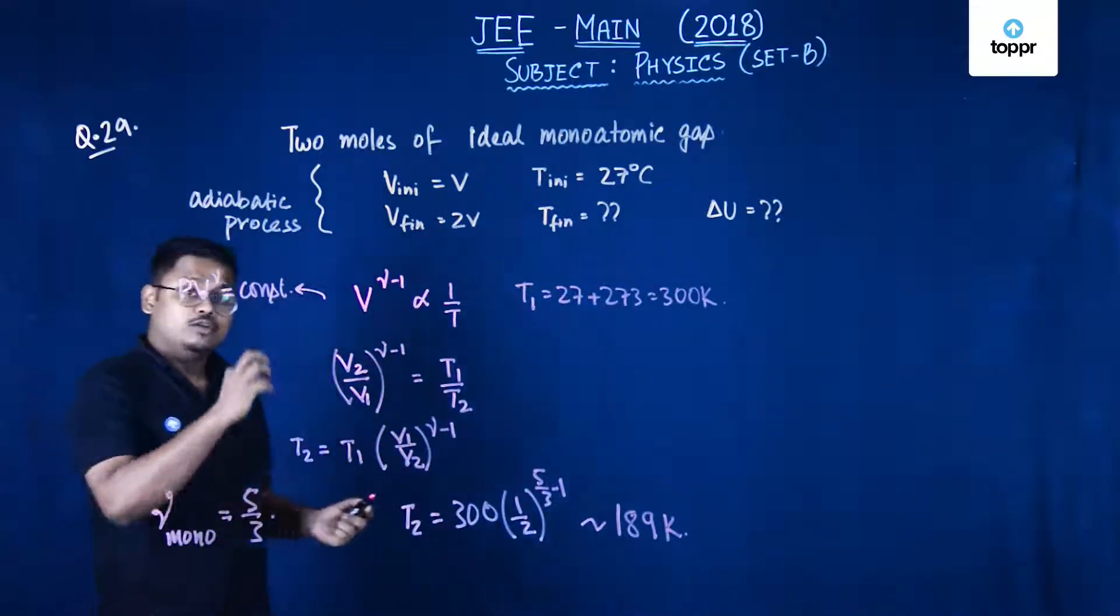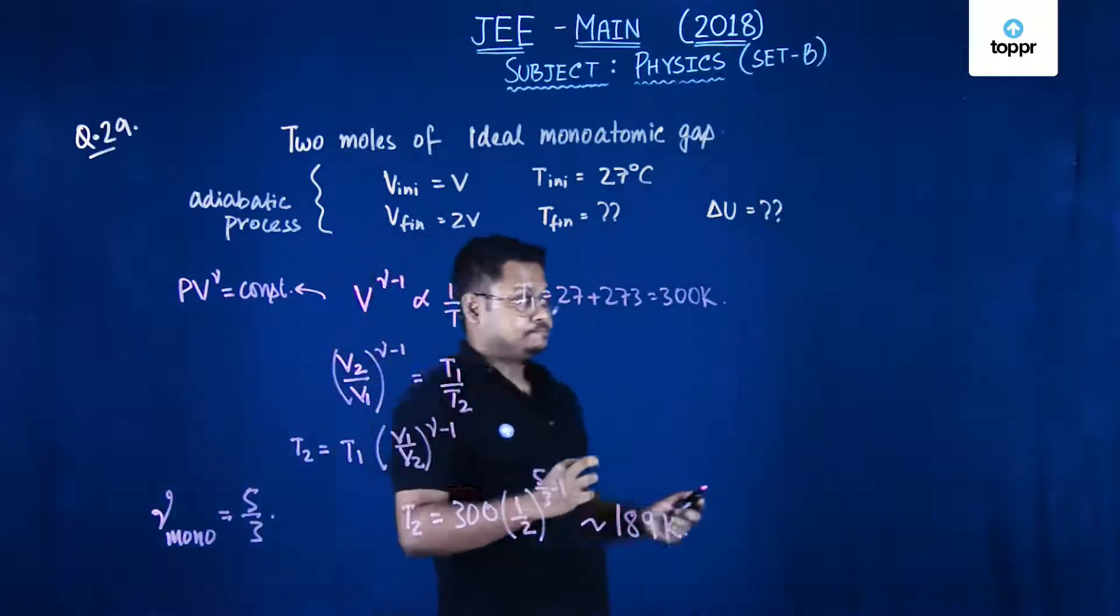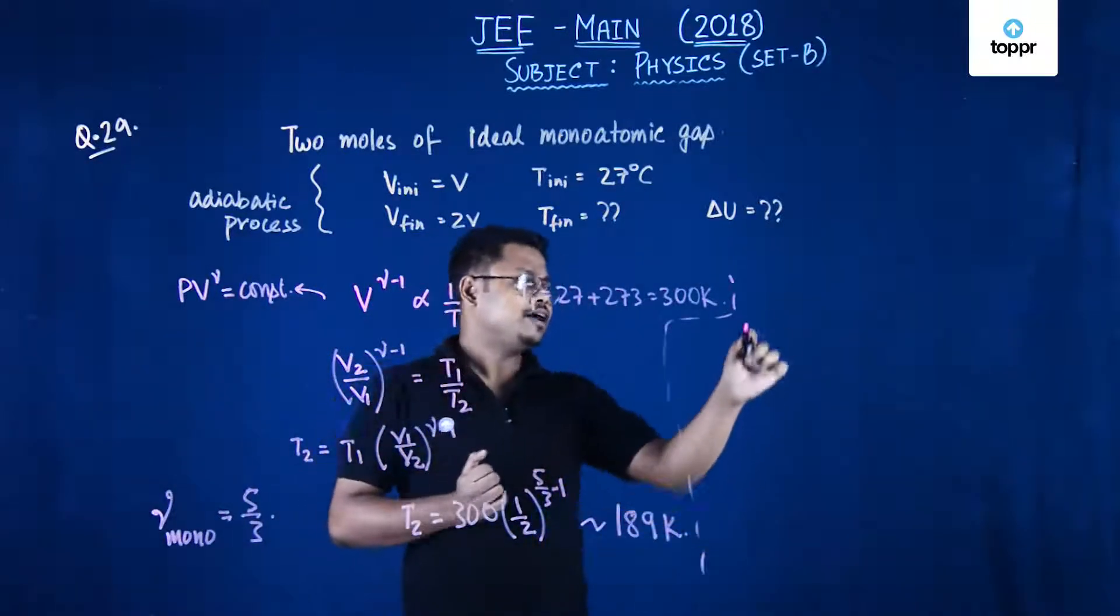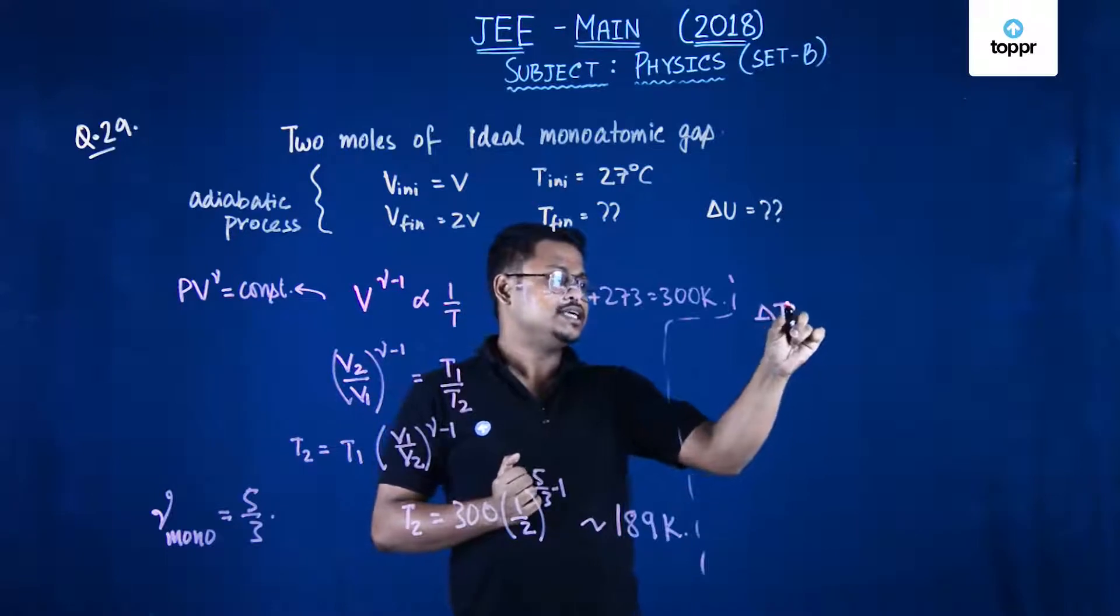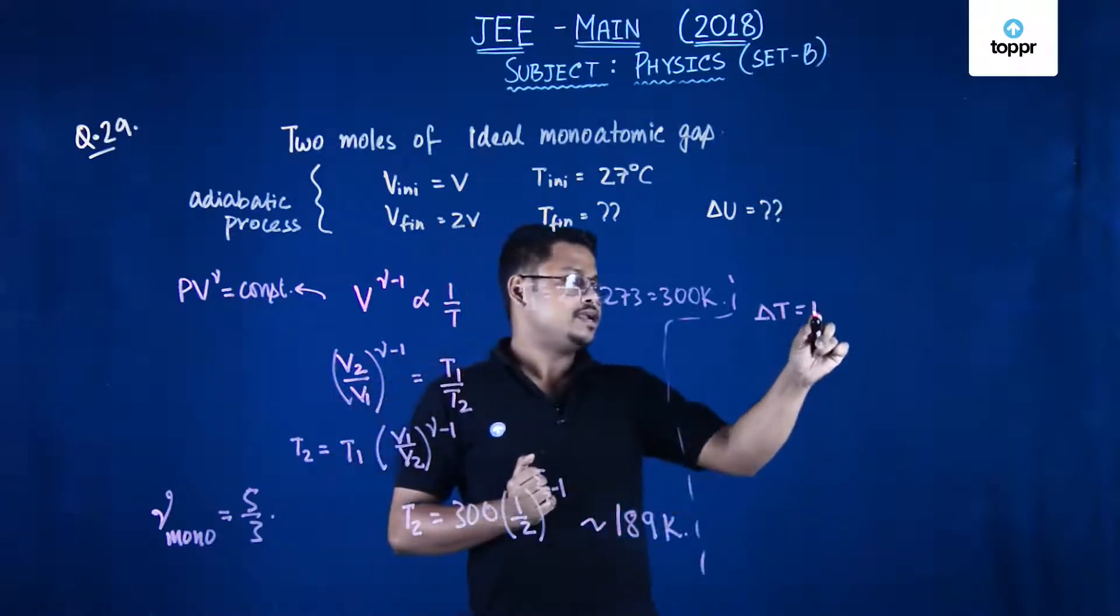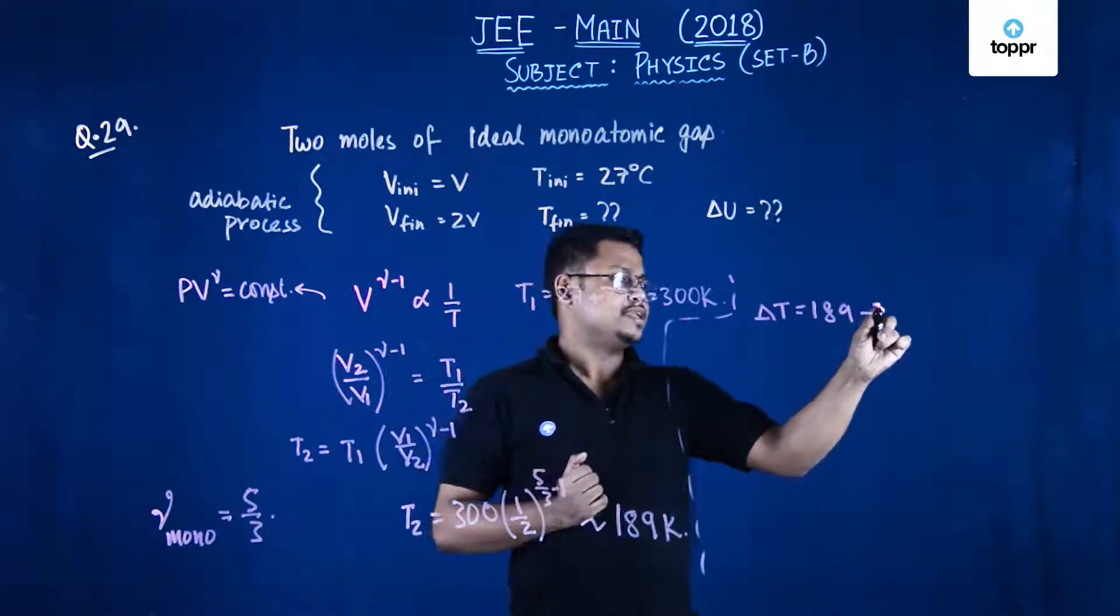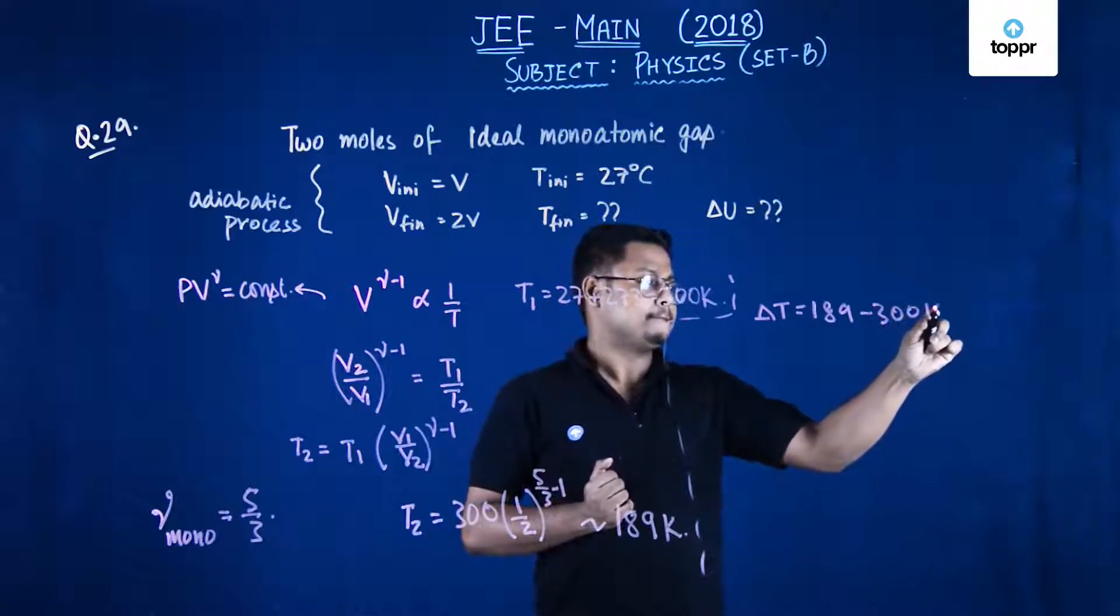So this is the value of the final temperature. Now what is the value of delta T? The change in temperature, that is 189 minus 300 Kelvin.